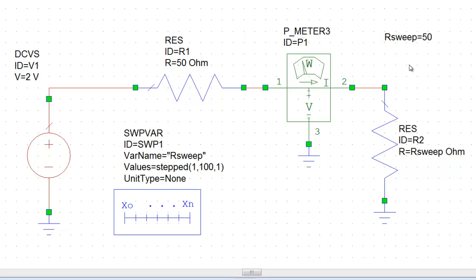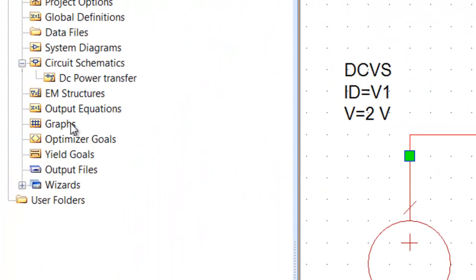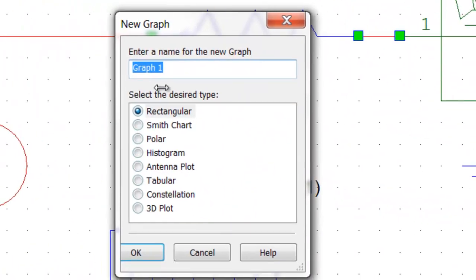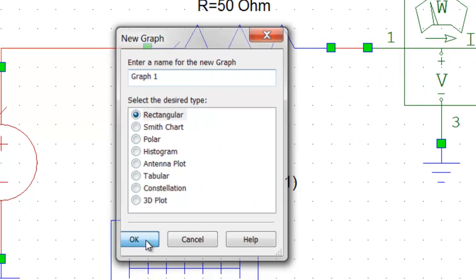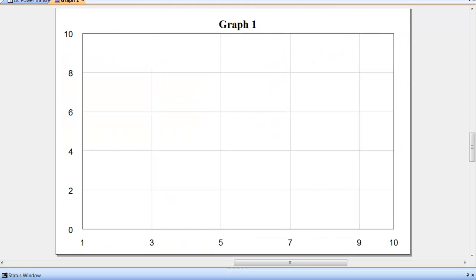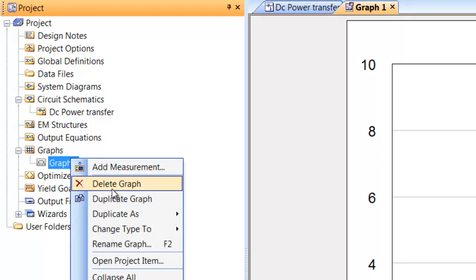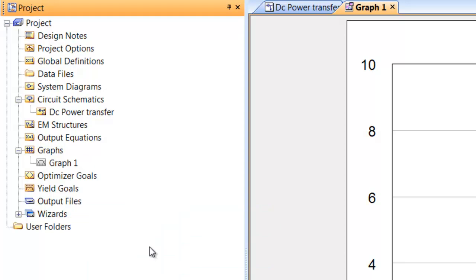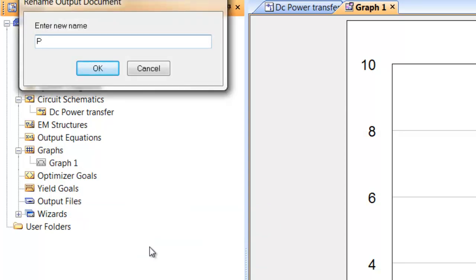This will now allow us to actually sweep the value of the load resistance across the range that we specified, which is 1 to 100 in increments of 1. And we can then see the dependency of power on the value of the load resistance. So let's just right click on graphs, open a new graph, have a rectangular one.